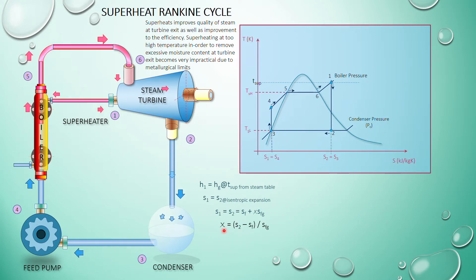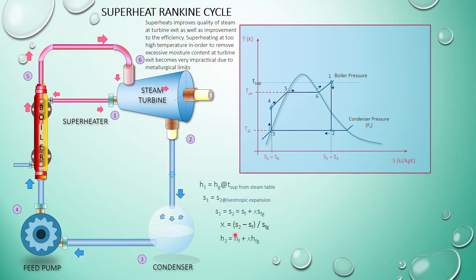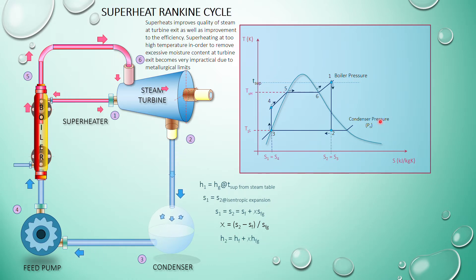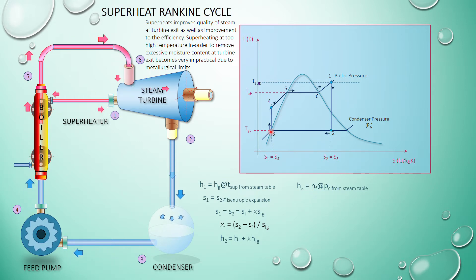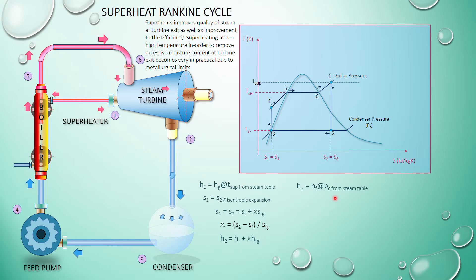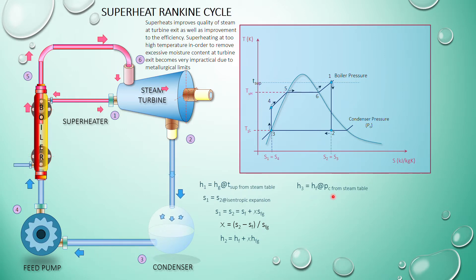Once you have found the dryness fraction, substitute into the formula to find h2. The hf and hfg values both refer to the condenser pressure. Substitute the dryness fraction x into the equation to find h2. Then h3 equals hf at the condenser pressure. All these values can be determined using the property table.